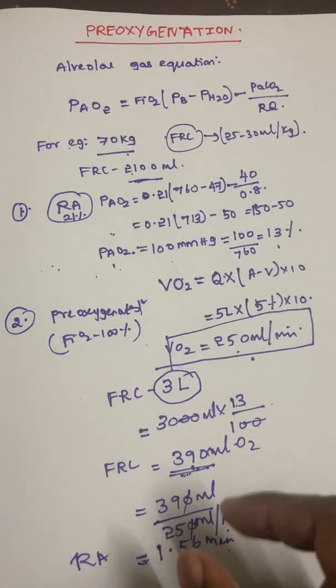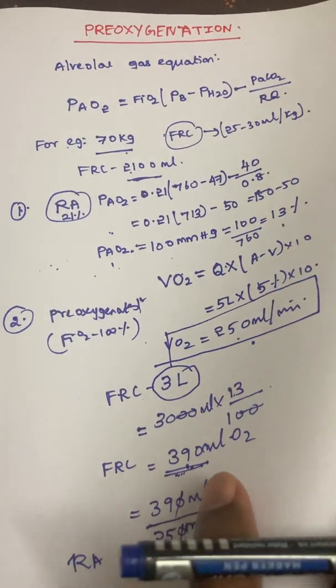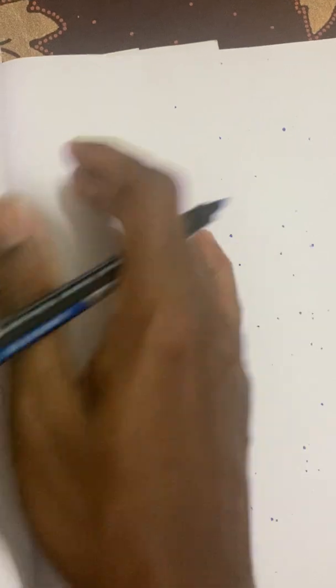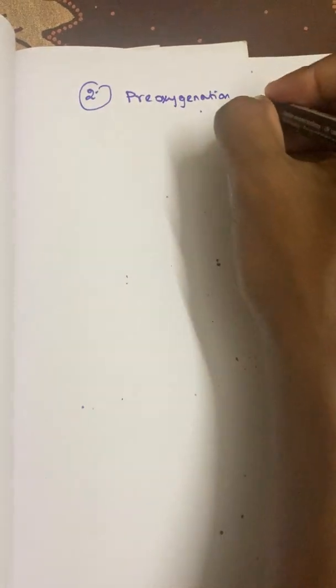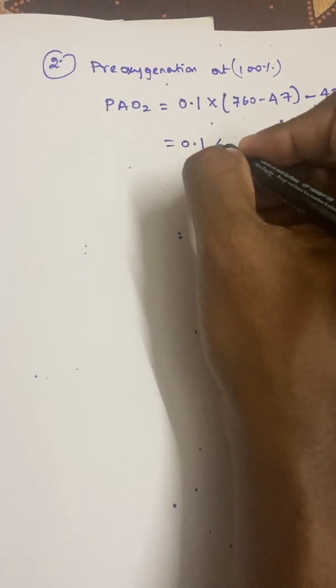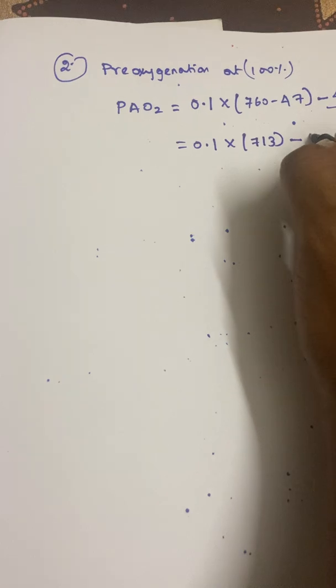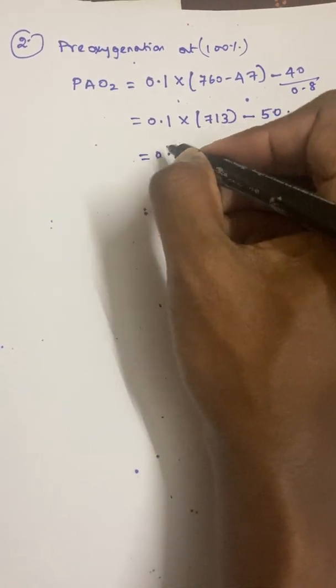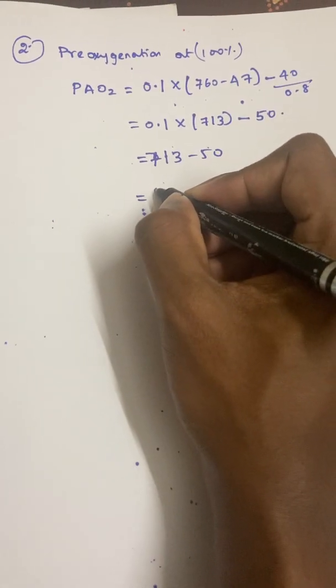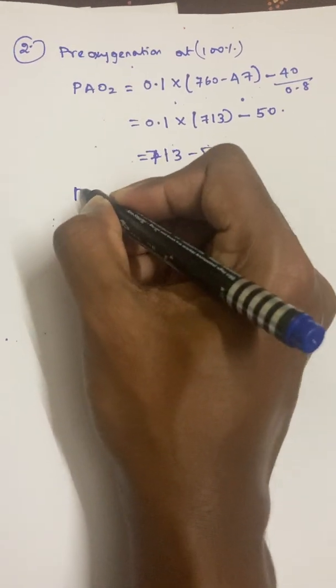Now we apply the same alveolar gas equation for the pre-oxygenated patient on 100% O2 (FiO2 = 1.0): PAO2 = 1.0 × (760 − 47) − 40/0.8 = 713 − 50 = 663 mmHg. So the alveolar PO2 with 100% O2 pre-oxygenation is 663 mmHg.